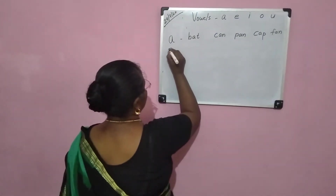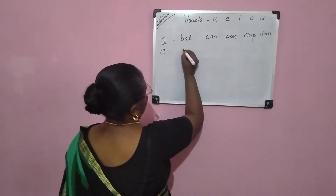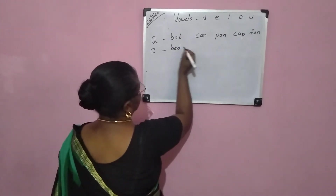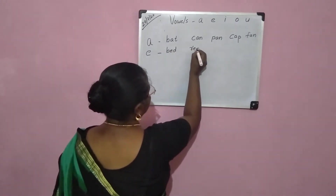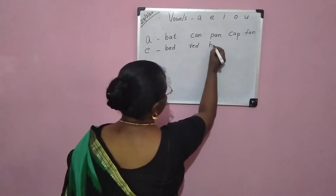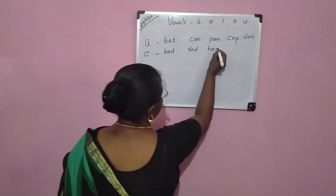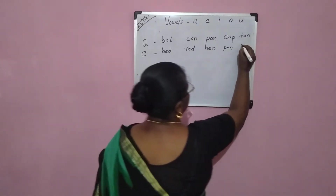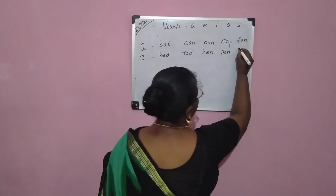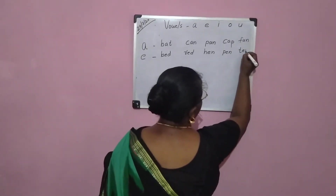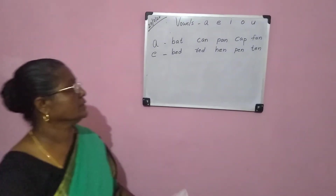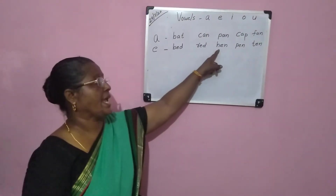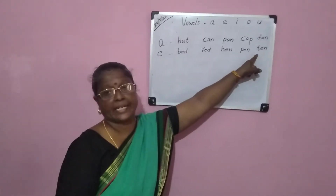E vowel sound. Words with the E vowel sound: red, hen, pen, ten. E vowel sound: red, hen, pen, ten.